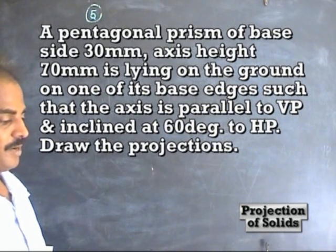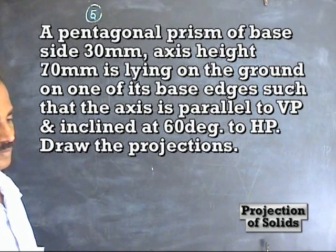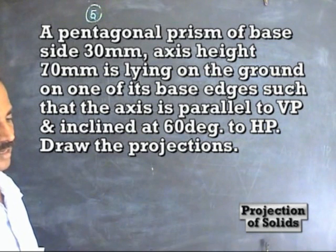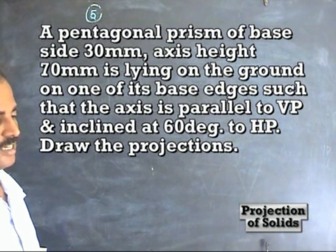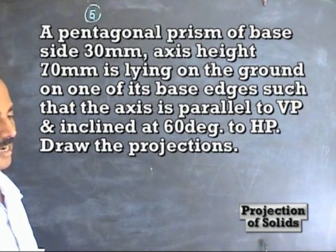Number 5: the pentagonal prism of base side 30 mm, axis 70 mm, is lying on the ground on one of its base edges such that the axis is parallel to VP and inclined at 60 degrees to HP.